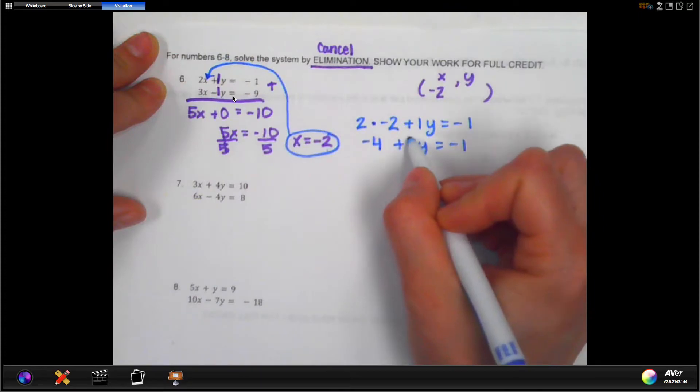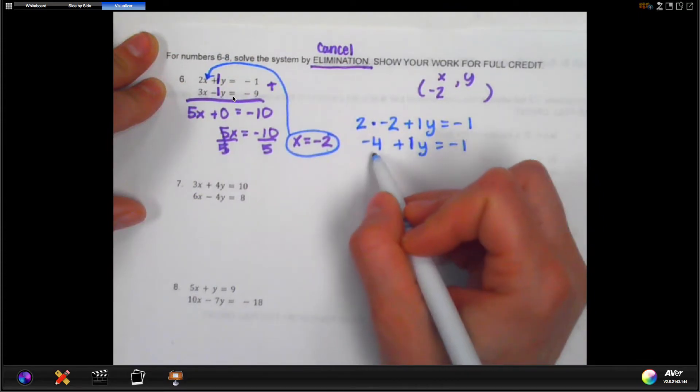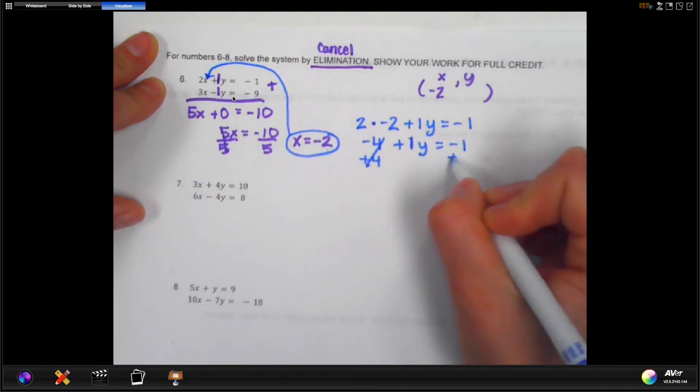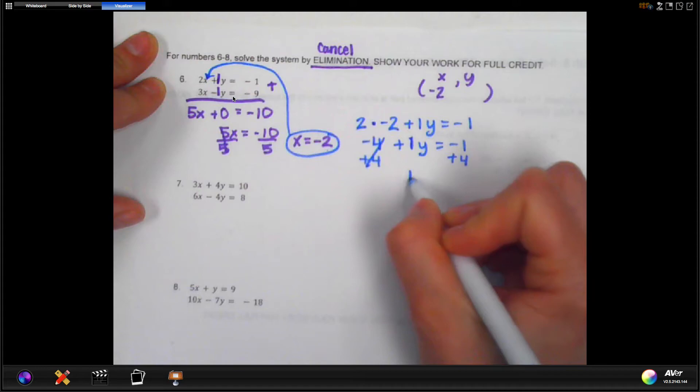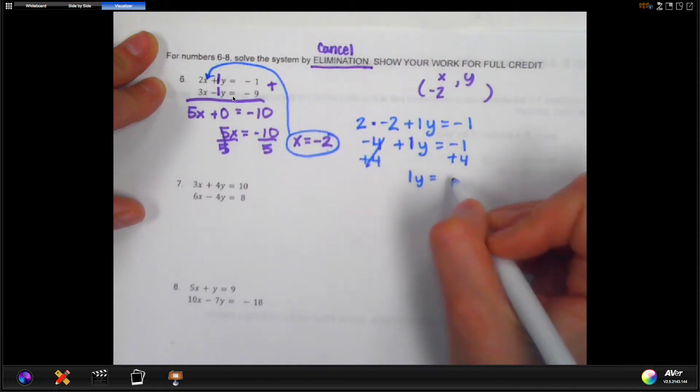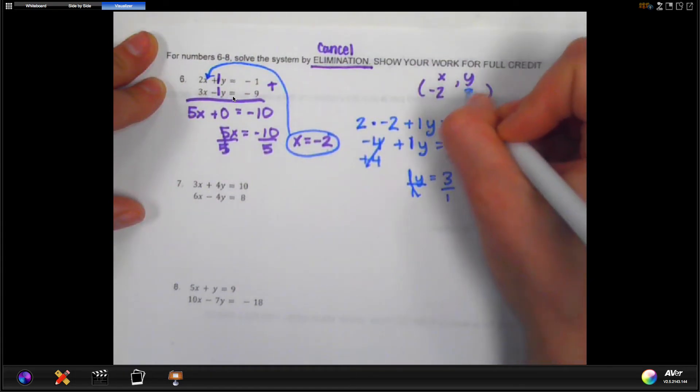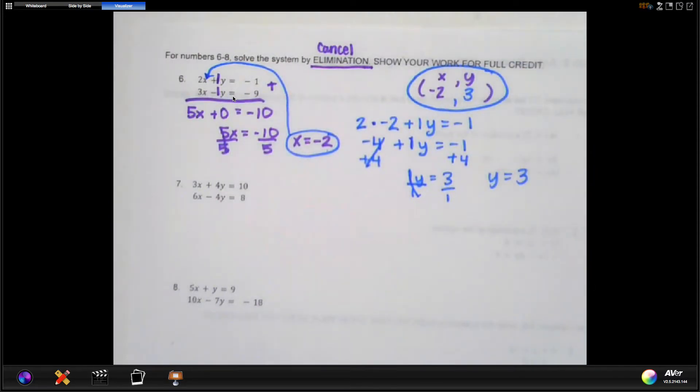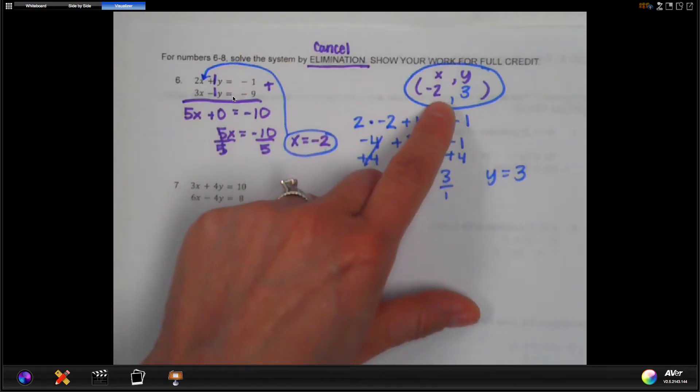And remember, now y is going to stay here, so we're going to undo the rest of it. So to undo a negative four, we will add four and add four over here. So bring down one y again. Negative one plus four is going to give us three. And finally, we divide by one, and we get y equal three. And that's the second half of our answer. So we know that the system will cross at negative two comma three.